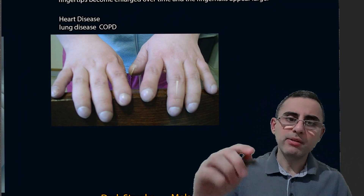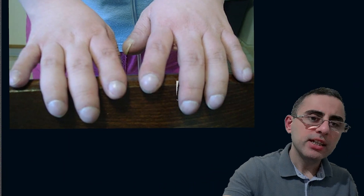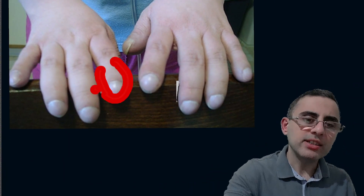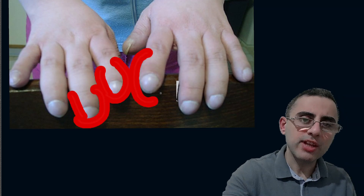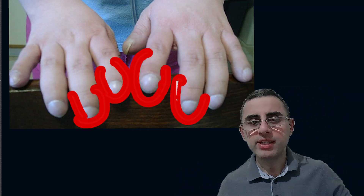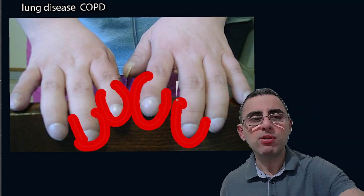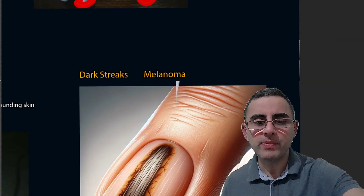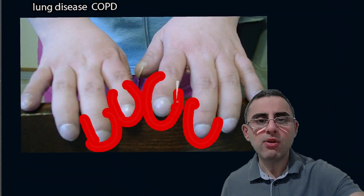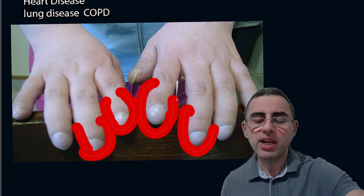Club nails occur when fingertips become enlarged over time and the fingernails appear larger. This is usually caused by lung disease or sometimes heart disease, and is a sign of long-term, prolonged hypoxia.